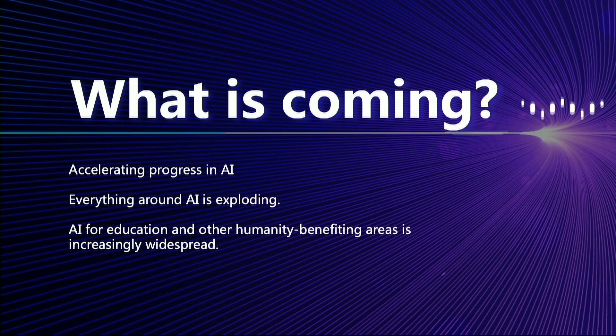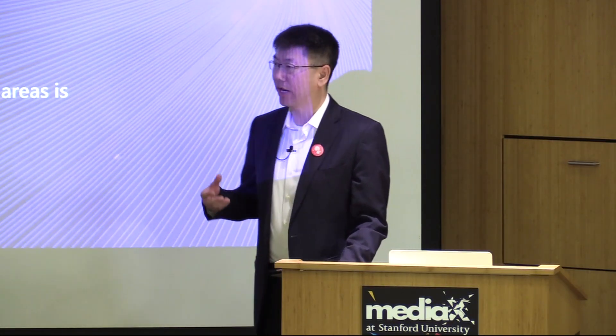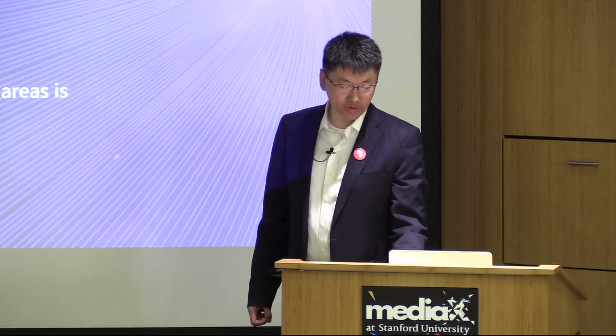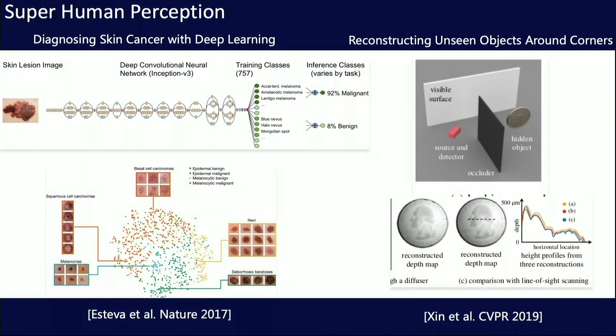What is coming in terms of AI? There are a lot of advances just in recent years. So much work has been done in accelerating progress in both deep learning as well as general AI applications using big data. I want to make two examples here, even though those are not directly used in education, but they are fundamental research advances that will be super helpful for the applications we're building.